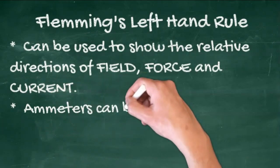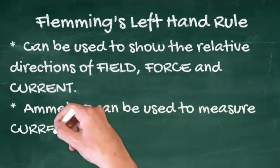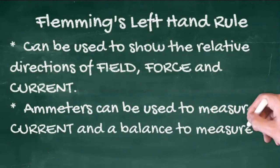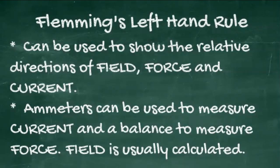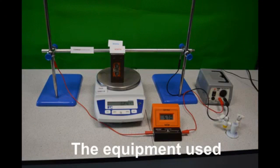An ammeter can be used to measure the current flowing, and a balance to measure the change in force. It's usually the field that's calculated. This experiment is an example of how you might calculate the field. Don't forget that weight is a force.